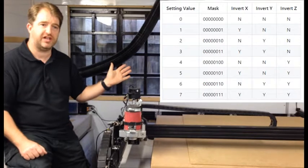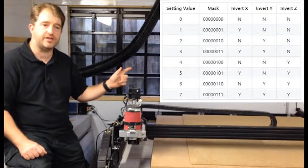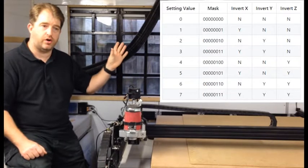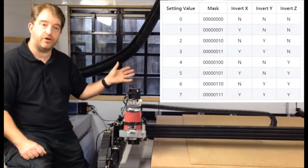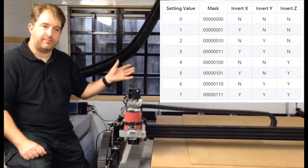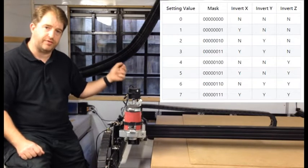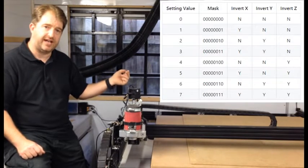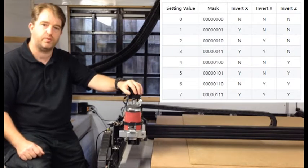This shows you all the values for the invert mask. Now mine is the fourth one down which is a decimal 3, and that inverts my X and my Y and doesn't invert my Z, and this is where it homes to with that setting.